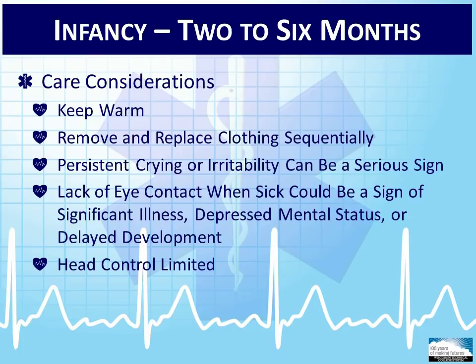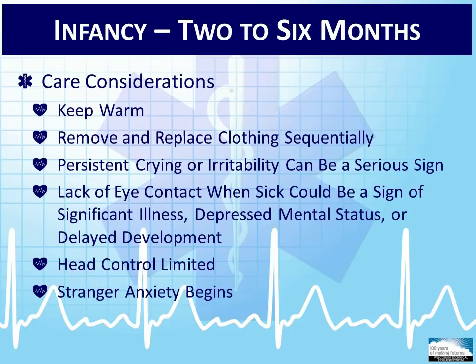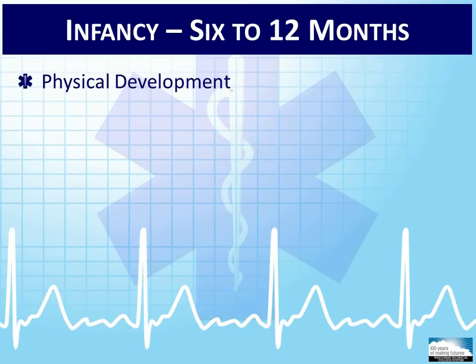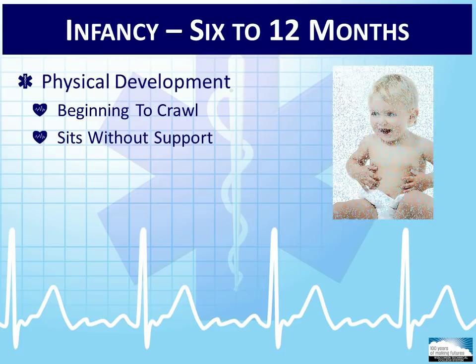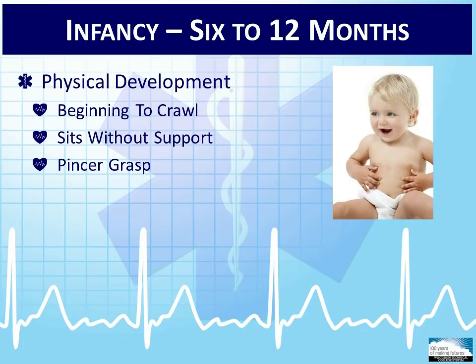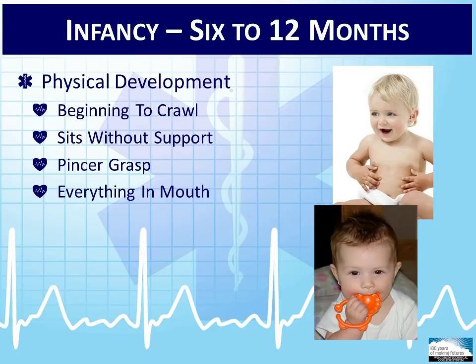Neck muscles are becoming stronger at this age, but head control is still limited, so protect the head and neck when lifting and moving the child. As the infant begins to recognize familiar faces, stranger anxiety also begins to develop. From 6 to 12 months, infants typically show increased mobility by beginning to crawl. These kids are now able to start sitting up without any support, and they move from grasping items with their palms to more of a pincher grasp by learning to use their thumbs and fingers.